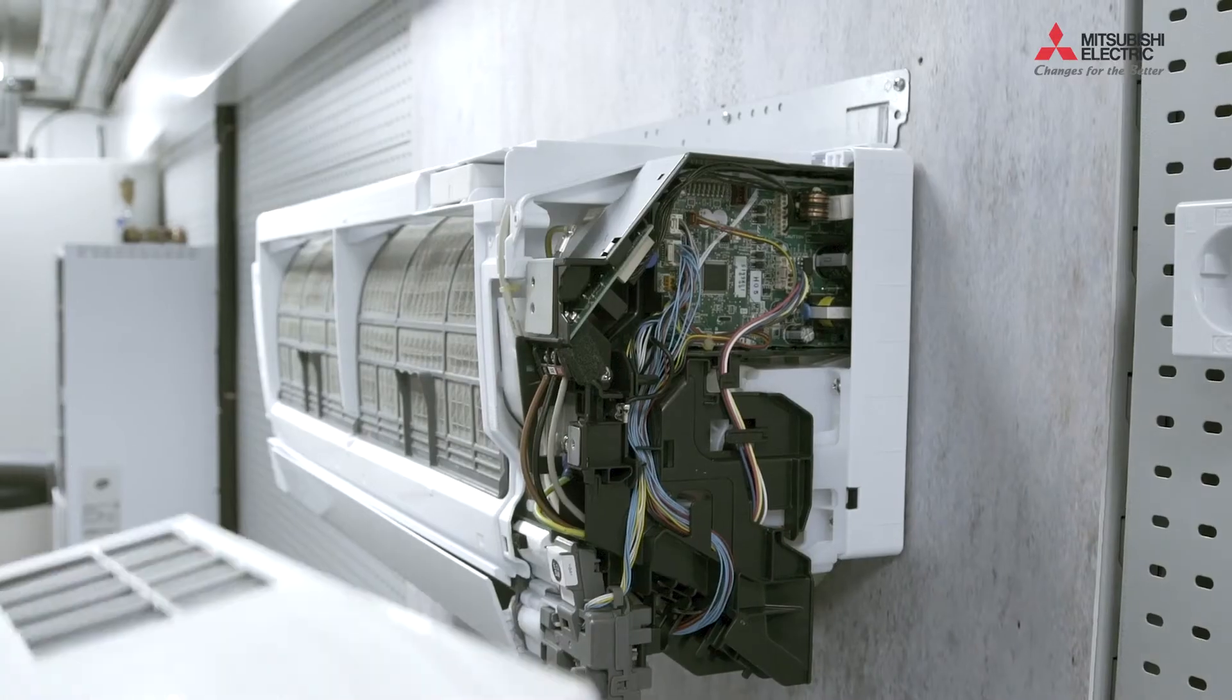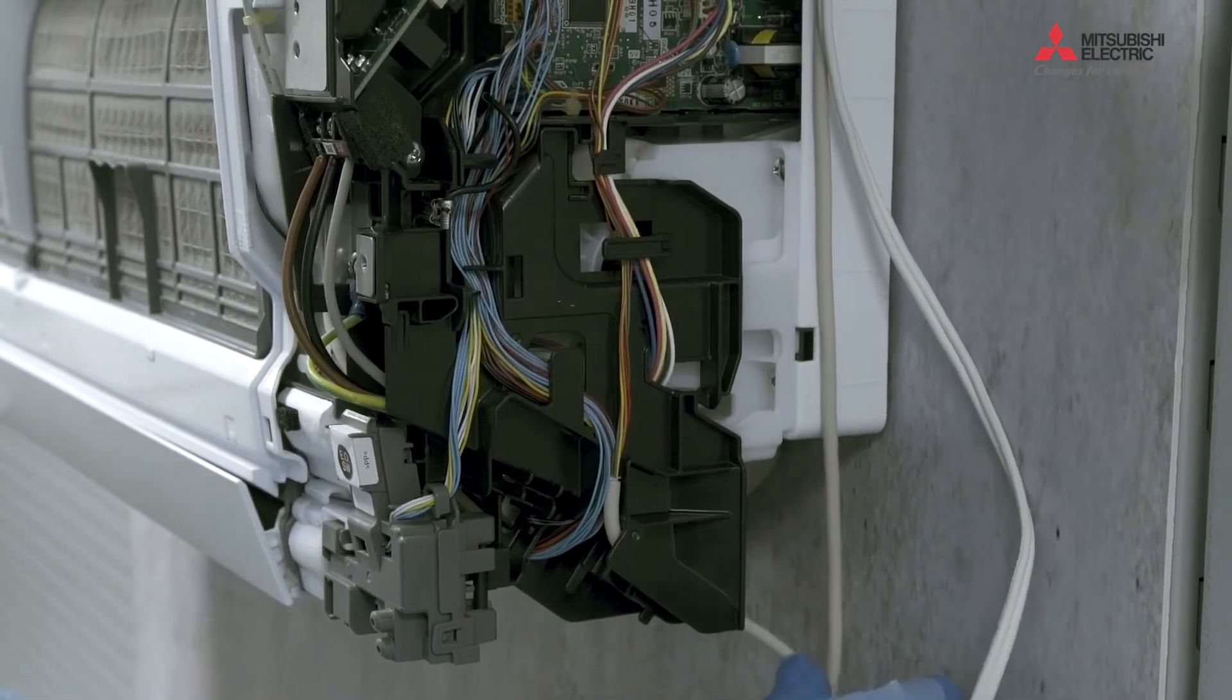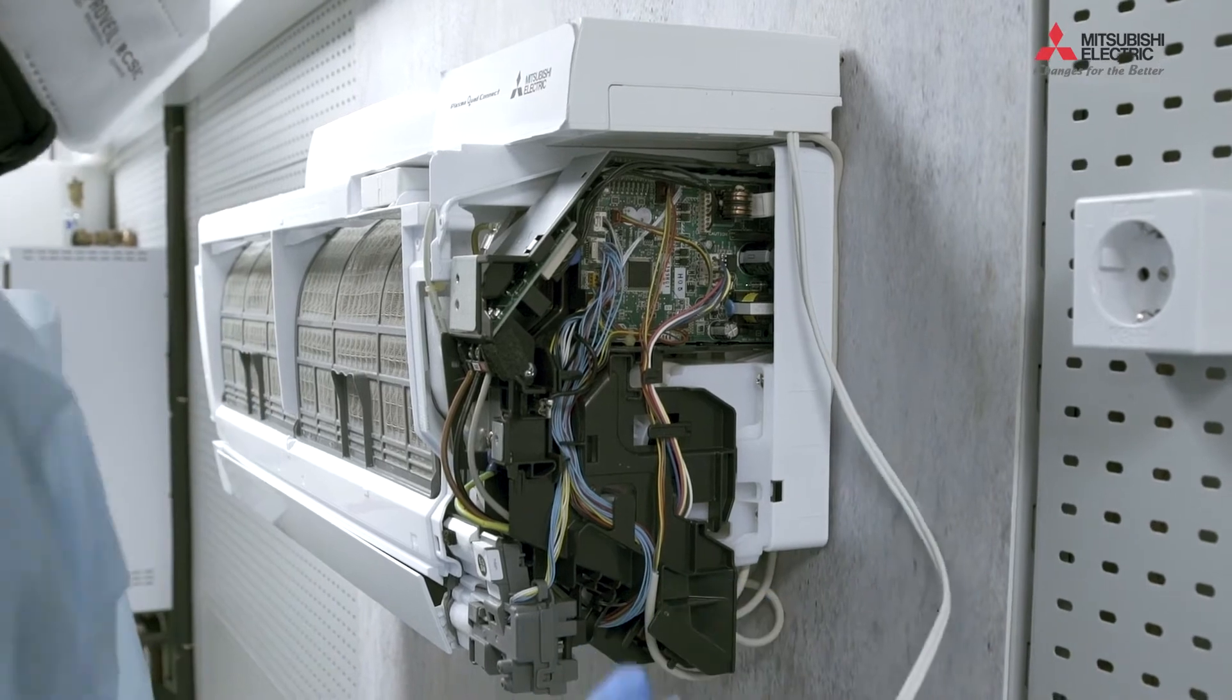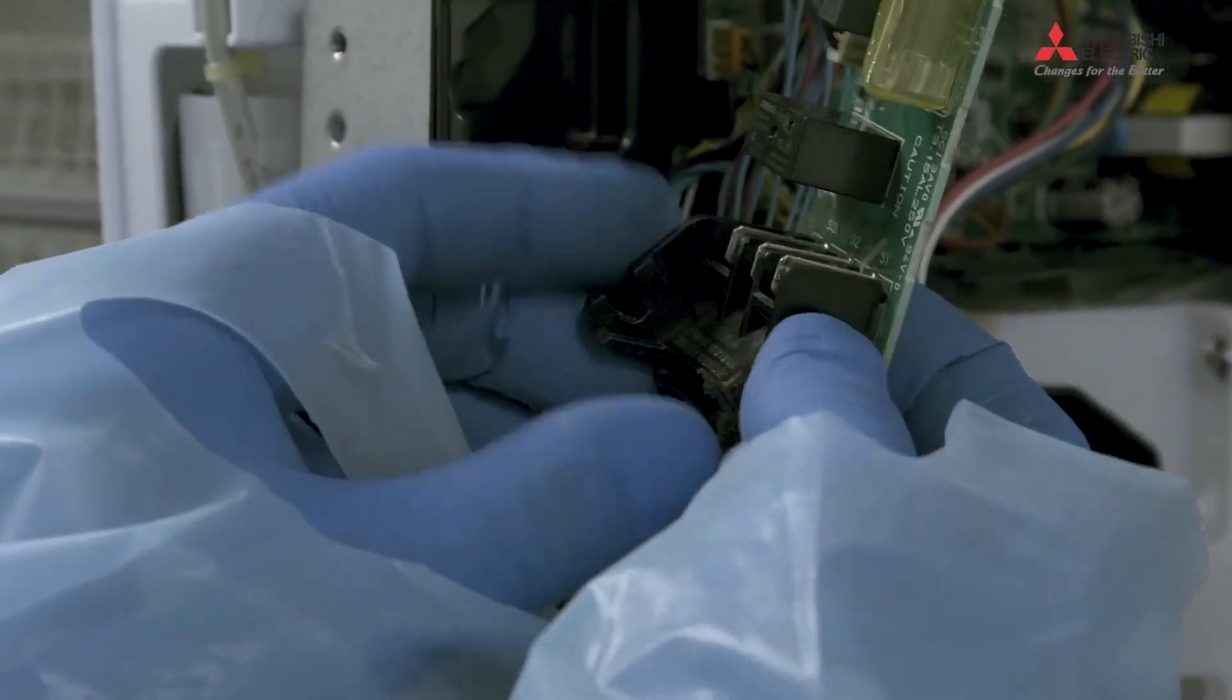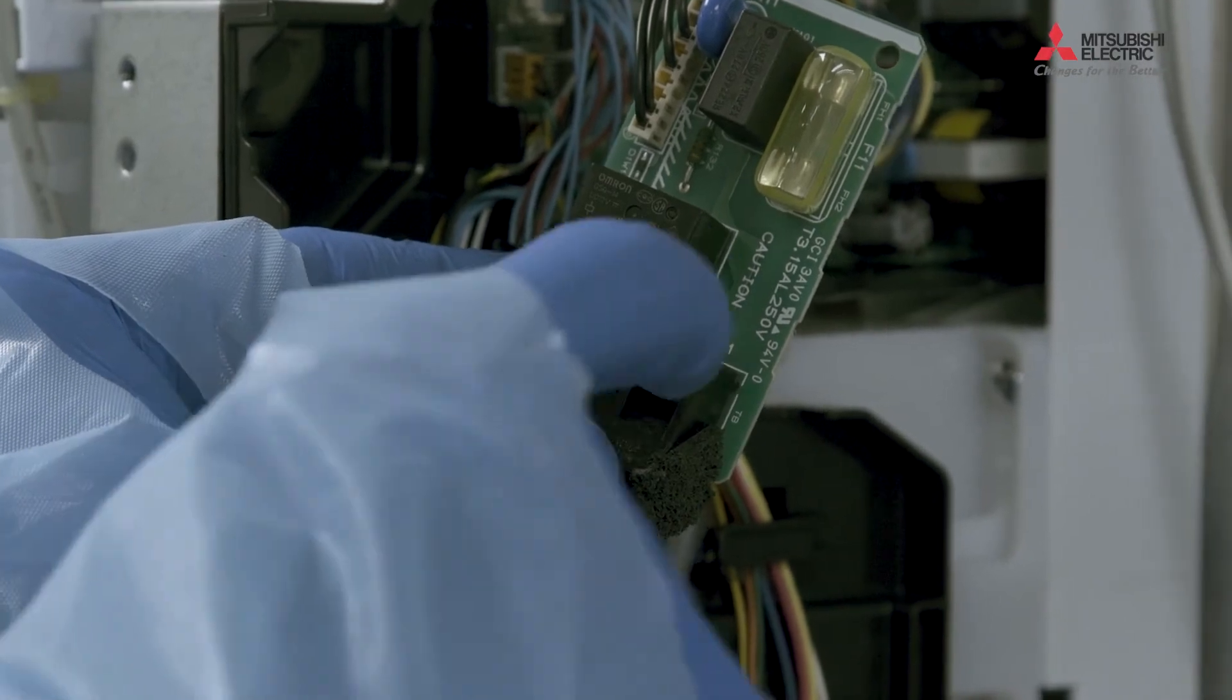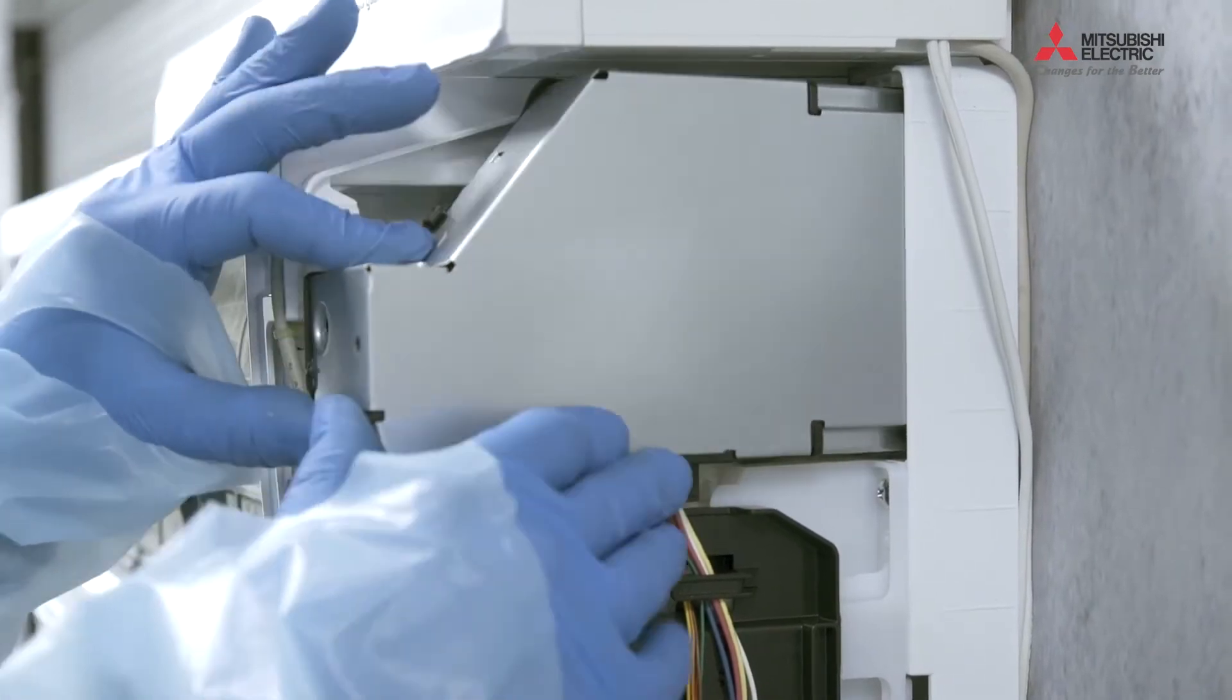Now, position the Plasma Quad Connect and connect the communication cable to the electronic circuit and the power cable to terminals S1 and S2. Position the cables following the machine's profile.